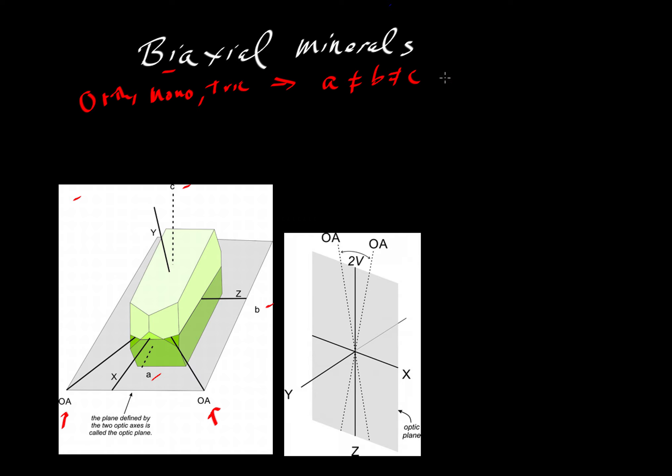Well, with three distinct crystallographic axes, we also get three distinct axes, X, Y, and Z, for the transmission of light.